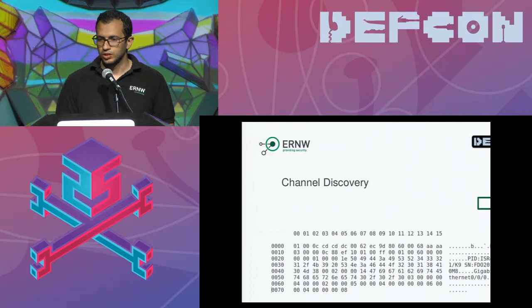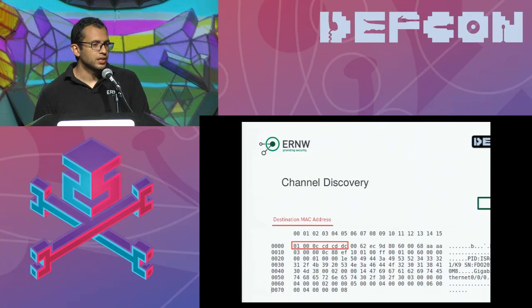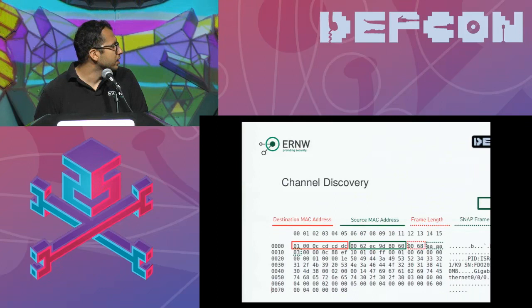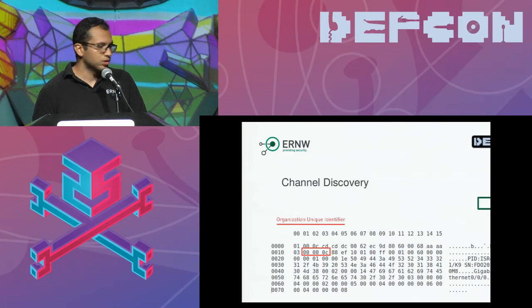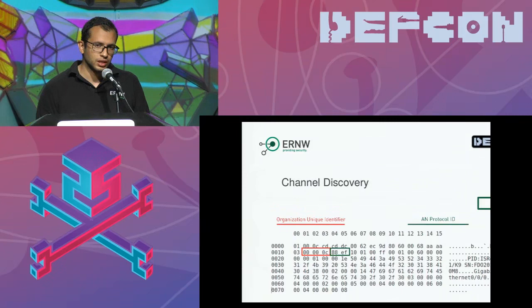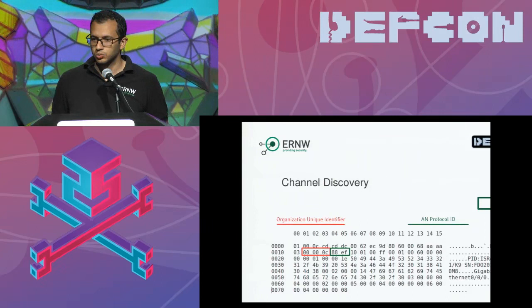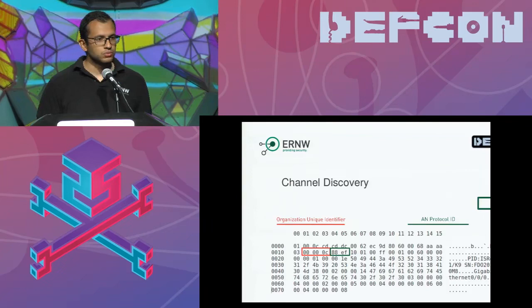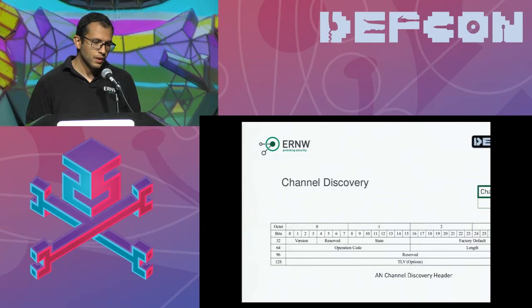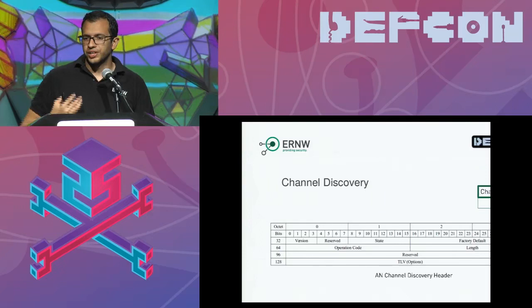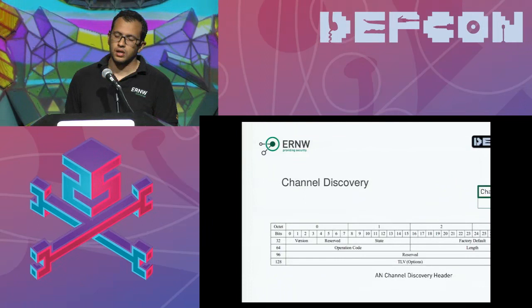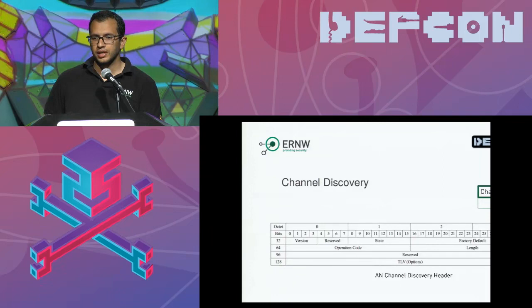To understand the SNAP frame: we start with destination MAC and source MAC, then the length, the SNAP frame identifier, the Organizationally Unique Identifier (OUI), and the Autonomic Protocol identifier. This is a proprietary protocol — Cisco described how the technology works, but didn't specify the packet content or significance. After reverse engineering and testing, we believe the protocol is based on a header with fixed parts followed by TLVs — type, length, and value fields.